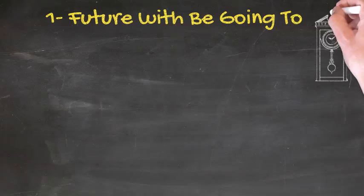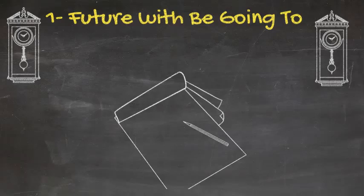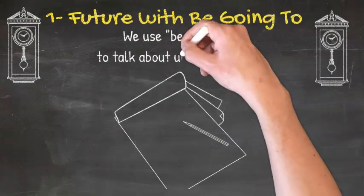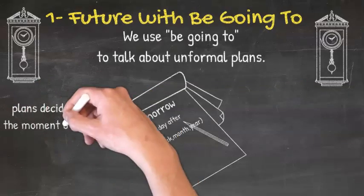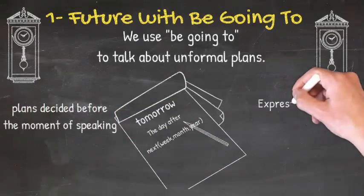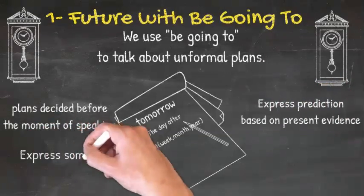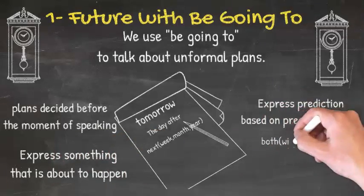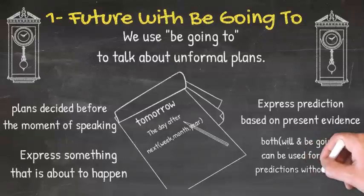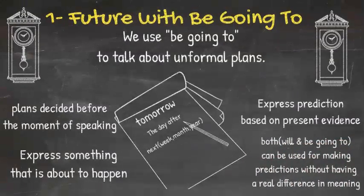First we will talk about the future with be going to. We use be going to to talk about informal plans, plans decided before the moment of speaking, express prediction based on present evidence, express something that is about to happen. Both will and be going to can be used for making prediction without having a real difference in meaning.